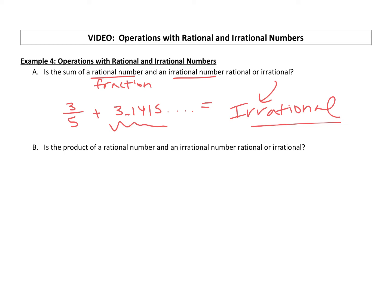Part B: is the product (remember, product is multiplying) of a rational number – so if you take a fraction and you multiply it with an irrational number that is not a fraction – what do you get back?